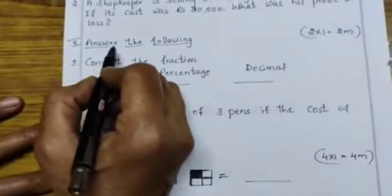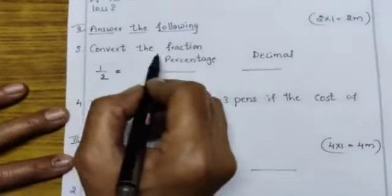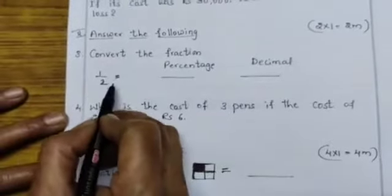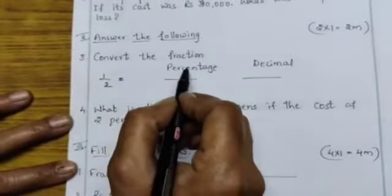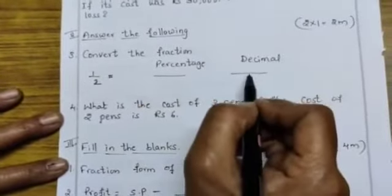Now second question, answer the following. Third bit, convert the fraction. Half is equal to, write it, this half, in percentage form and in decimal form.